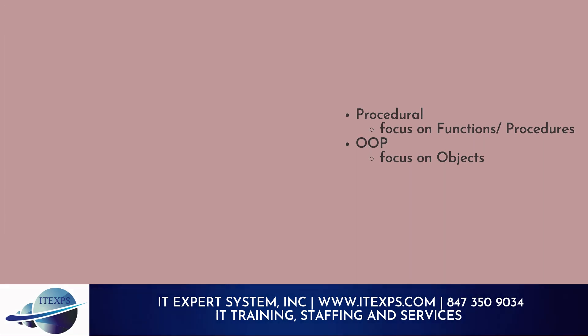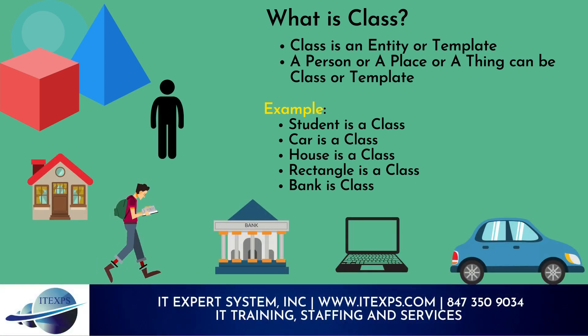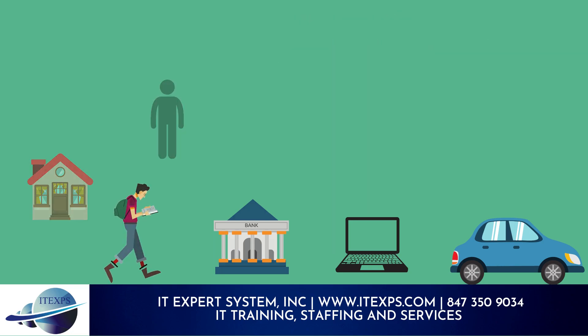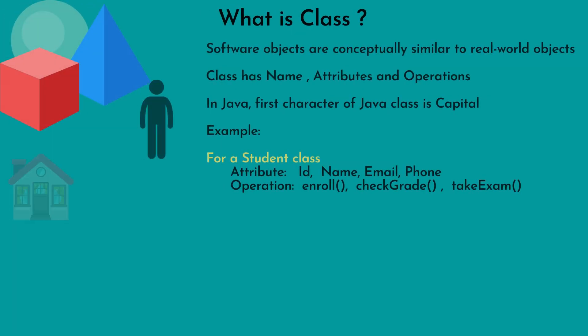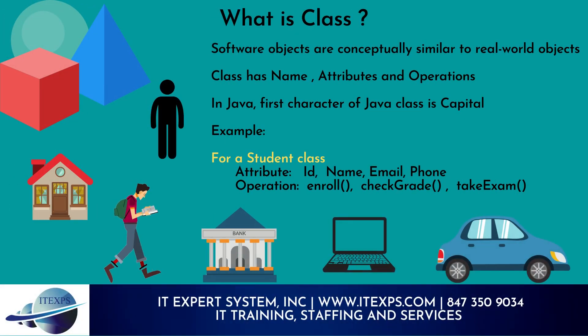Question: What is a class? A class is an entity or template — a person, place, or thing can be a class or template. Examples: student is a class, car is a class, house is a class, rectangle is a class, bank is a class. Software objects are conceptually similar to real-world objects. A class has a name, attributes, and operations.